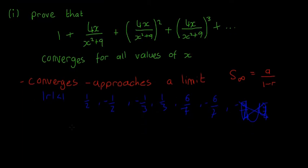Another way to express this — and it will be helpful for this question — is that r lies in the open interval between -1 and 1. It can be -0.999 or +0.999 or any number in between, but it cannot equal -1 or 1.